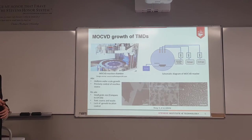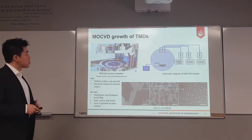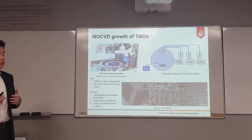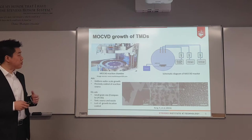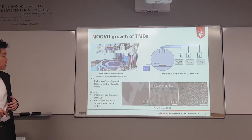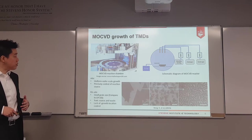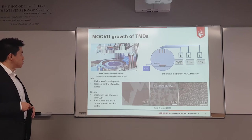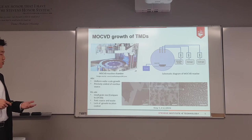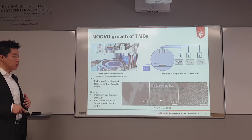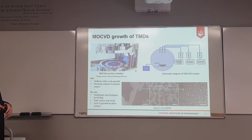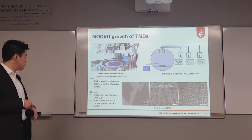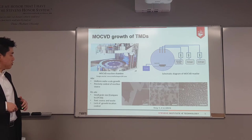In MOCVD growth of TMDs, all precursors are supplied by gas formats through a mass flow controller. This means we can precisely control the amount of reactants, the speed, and the ratio between precursors — very important for controlling growth properties such as shape and edge termination. MOCVD is one of the best methods as it provides uniform wafer-scale growth. However, MOCVD has disadvantages: relatively small grain size compared to LPCVD, toxic precursor gases, expensive waste treatment, and growth occurs at random locations.